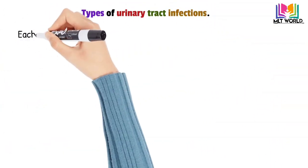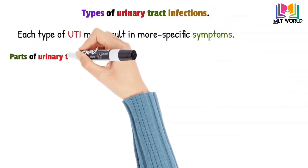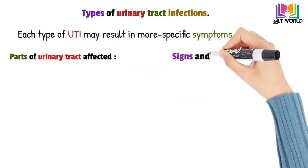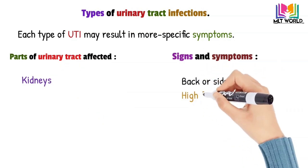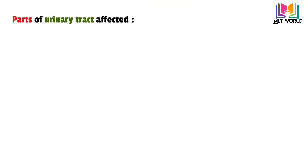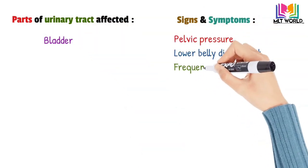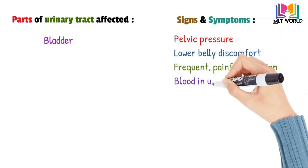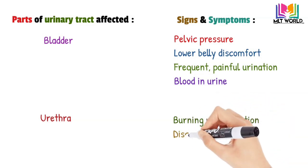Now we will see the types of urinary tract infection. Each type of UTI may result in more specific symptoms depending on which part of the urinary tract is affected. Kidney symptoms: back or side pain, high fever, shaking and chills, nausea and vomiting. Bladder symptoms: pelvic pressure, lower belly discomfort, frequent painful urination, and blood in urine. Urethra symptoms: burning with urination and discharge.